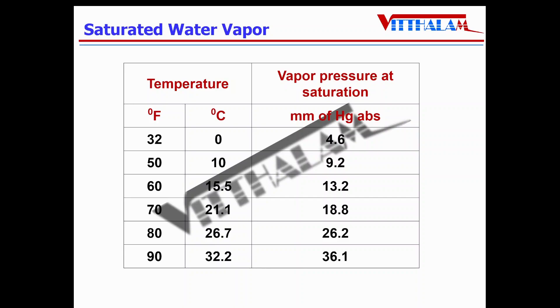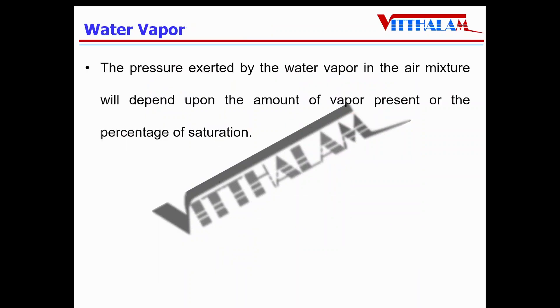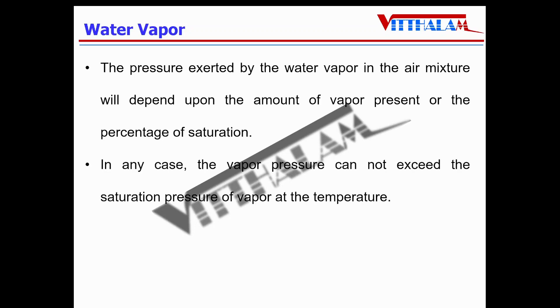And we can say it is in superheated conditions at temperature of, let's say, 25 degrees Celsius. The pressure exerted by the water vapor in the air mixture will depend upon the amount of vapor present or the percentage of the saturation. However, in any case, the vapor pressure cannot exceed the saturation pressure of vapor at a particular temperature.